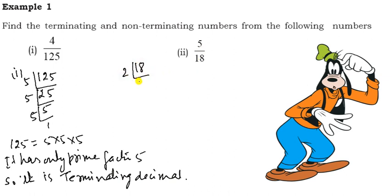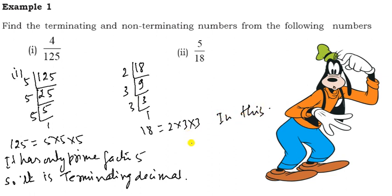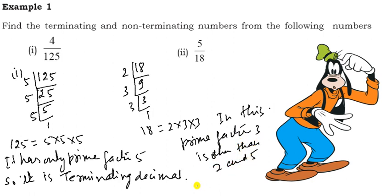For 5 upon 18, find the prime factors of 18. We get 18 = 2 × 3 × 3. Since 3 is a prime factor other than 2 and 5, this is a non-terminating decimal.